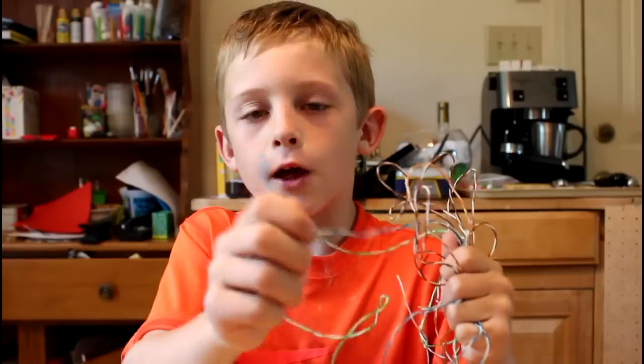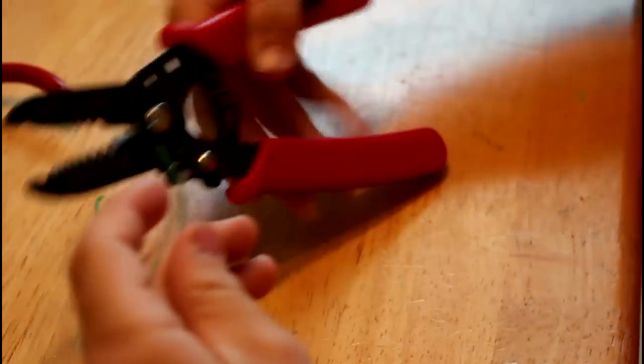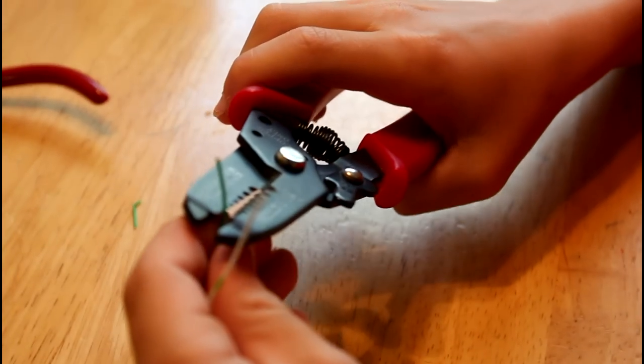First thing you want to do is take your old network wire and cut the ends off, then take the casing off so you get a bunch of wires like this. Do not unwind the wires. You want to strip about two to three centimeters off the end of the wire.